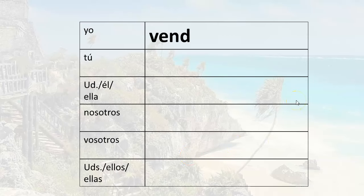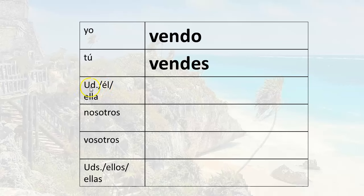So we have yo, and then we have the root — I've taken off the ER and I have my root, and all I need to do is add the ending. If I want to say I sell or I am selling in Spanish, it's yo vendo. You sell or you are selling: tú vendes. The formal you, usted — remember that ud is just an abbreviation for usted — usted vende. He sells or he is selling: él vende. She sells or she is selling: ella vende.